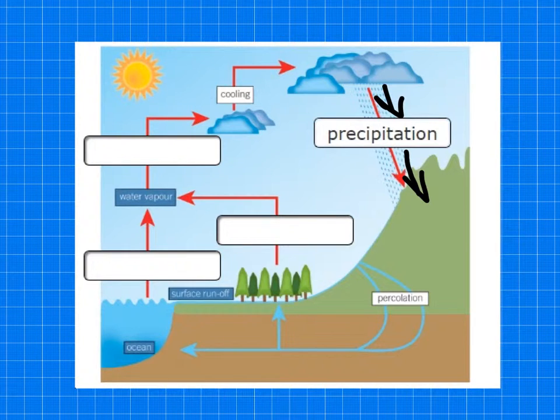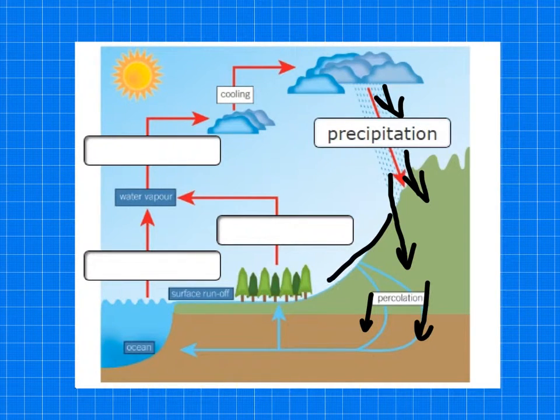Now some of that rain is going to be taken up by plants. Other rainfall is going to percolate into the soil, and some of it is going to run off the surfaces of the land.